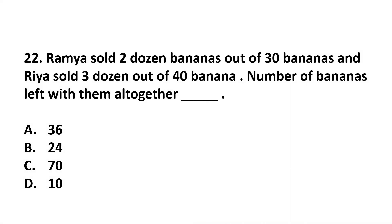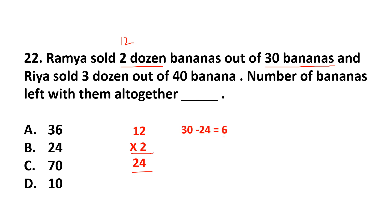Question number 22. Ramya sold 2 dozen bananas out of 30 bananas, and Ria sold 3 dozen out of 40 bananas. Find the number of bananas left with them altogether. Ramya has 30 bananas, and she sold 2 dozen. In 1 dozen there are 12 bananas, so in 2 dozens: 12 multiplied by 2 is 24. She sold 24 bananas, so she is left with 30 minus 24 = 6 bananas.